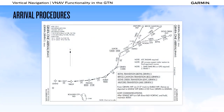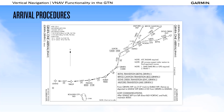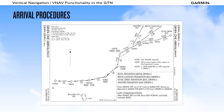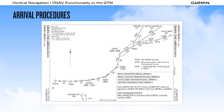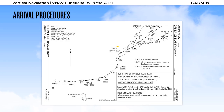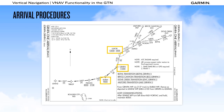Pilots who fly arrival procedures regularly are familiar with the descend via clearance given by ATC. This clearance simplifies communications but can lead to errors if not properly managed. With an arrival procedure containing altitude constraints loaded, the VNAV function provides an optimized descent profile to ensure each constraint is met. For this demonstration, we've selected the Grandpa 1 arrival into Las Vegas, which has multiple altitude constraints: Luxor at 12,000, Grandpa at 11,000, Dublix at 9,000, and Frog at 8,000.